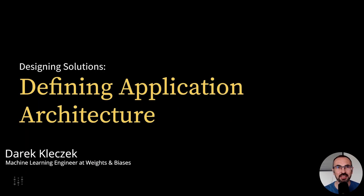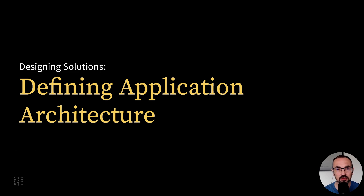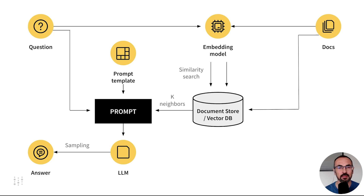Now that we know the issues in getting accurate answers by simply calling an API, let's explore a more interesting solution. In the diagram of our solution, we have several elements. Let's start from the right-hand side.